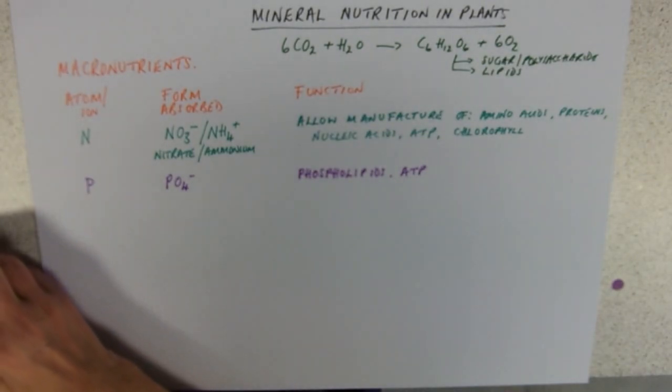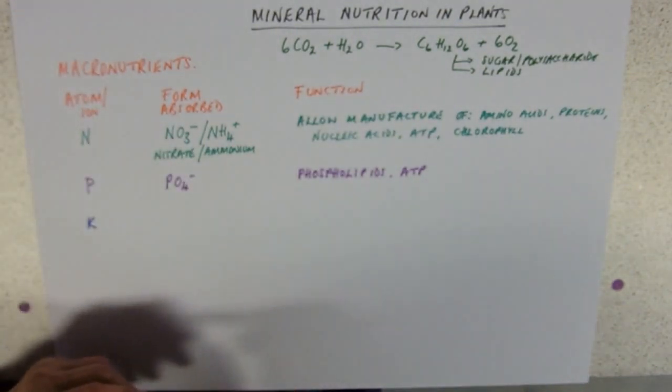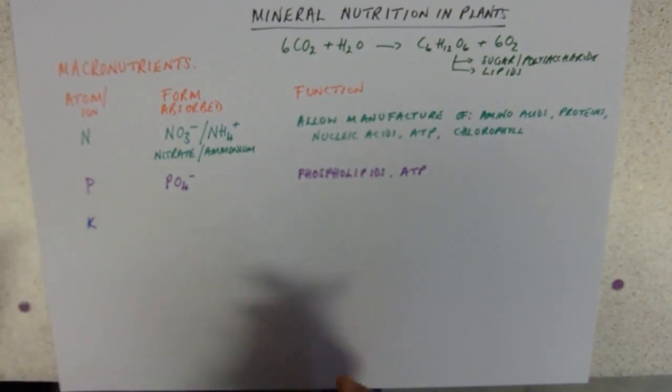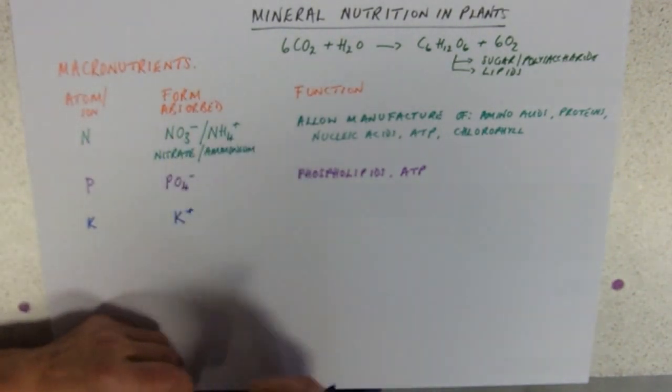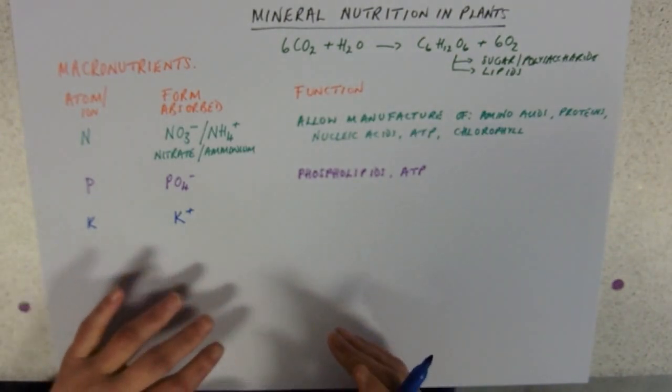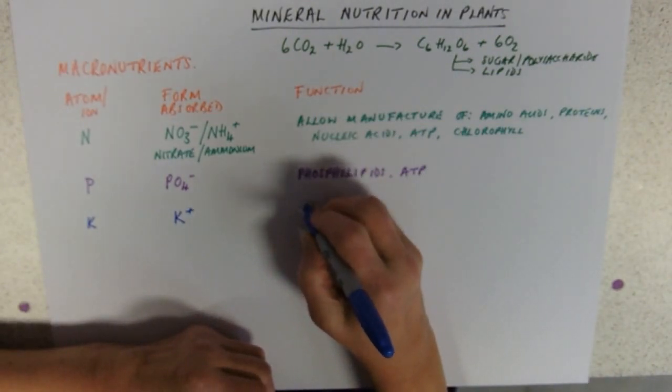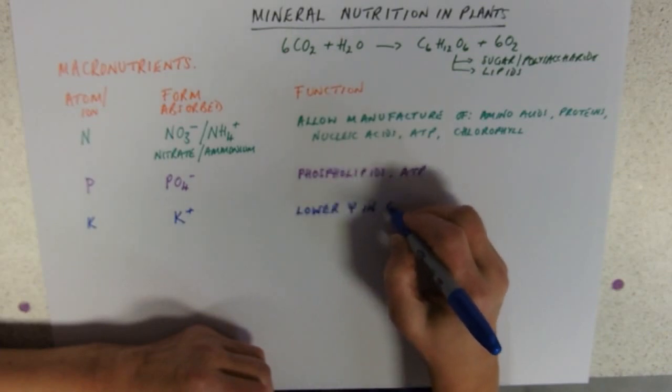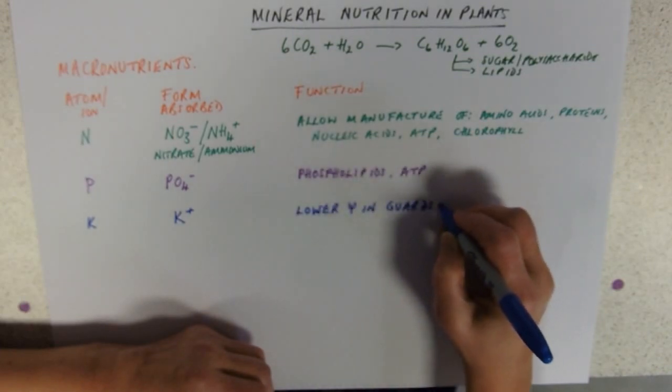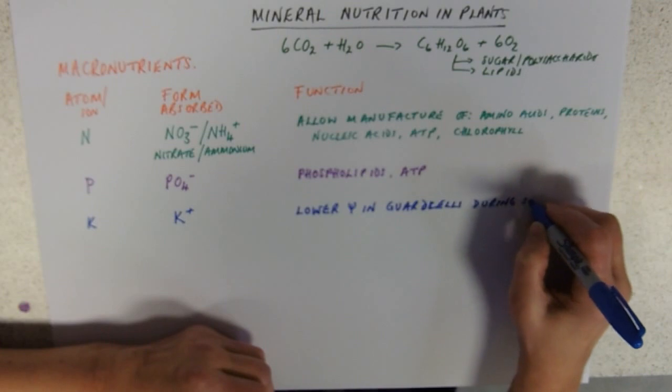We've then got potassium. Chemical symbol K, I know, but that's how it is. Taken in in the form of potassium ions K plus. Again, synoptically thinking about the role of potassium ions in plants, their function is to lower the water potential in guard cells during stomatal opening.